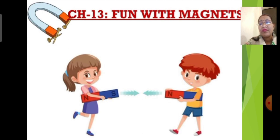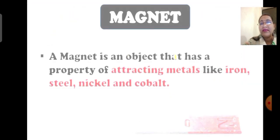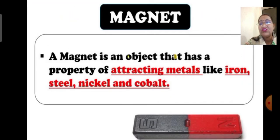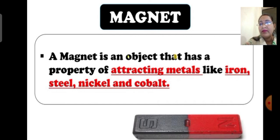Let us understand the definition of magnets. A magnet is an object that has the property of attracting metals like iron, steel, nickel, and cobalt. In the image near the title you can see a bar-shaped magnet. A straight magnet is called a bar magnet.